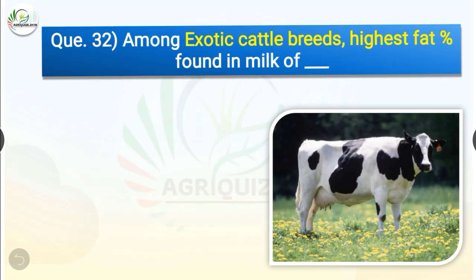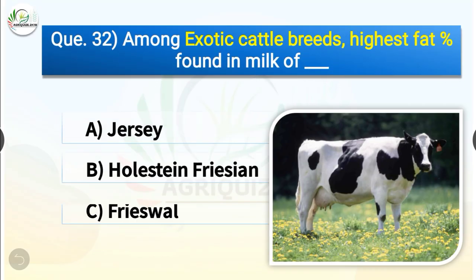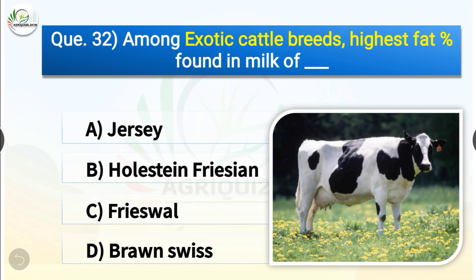Question number 32. Among exotic cattle breeds, highest fat percentage is found in the milk of dash. The options are Jersey, Holstein-Friesian, Frieswal or Braunvieh. The correct answer is option A, Jersey. So among exotic cattle breeds, highest fat percentage is found in milk of Jersey.